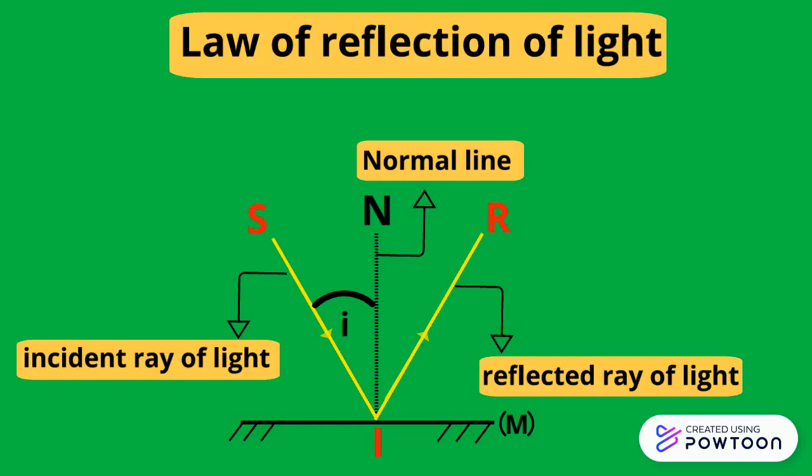The angle of incidence i is the angle that the incident ray forms with the normal at I. The angle of reflection r is the angle that the reflected ray forms with the normal at I.